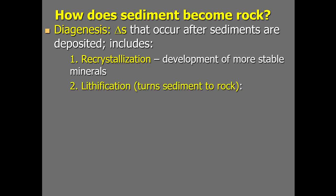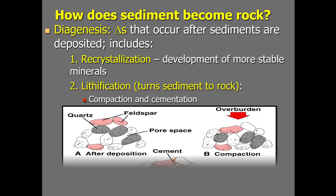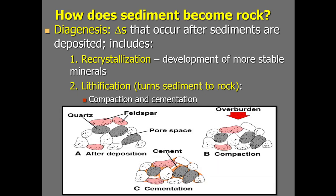Once most minerals are stabilized, the next process that occurs is called lithification — the actual process of creating rock. The word part 'lith' means rock, so lithification is literally the creation of rock, turning sediment into rock. The process of lithification collectively involves compaction of particles and then cementation of them together, as illustrated in this diagram.